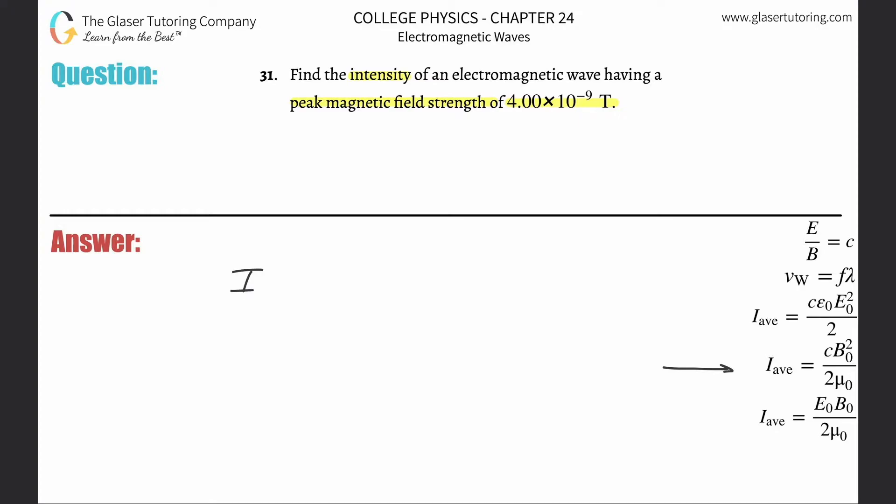This says that the average intensity, don't confuse it with current, is going to be equal to the speed of light multiplied by the peak magnetic field strength squared, divided then by two times the permeability of free space.